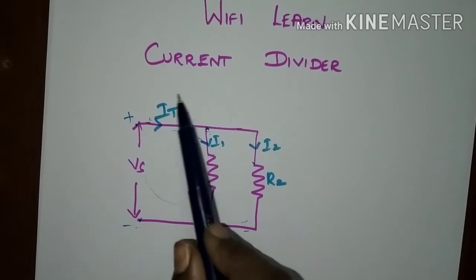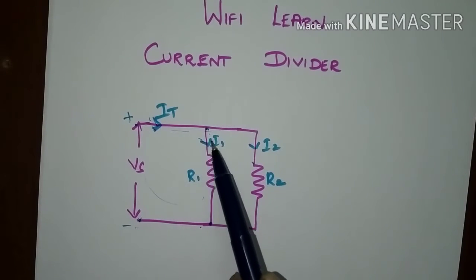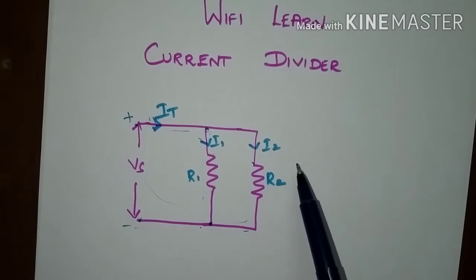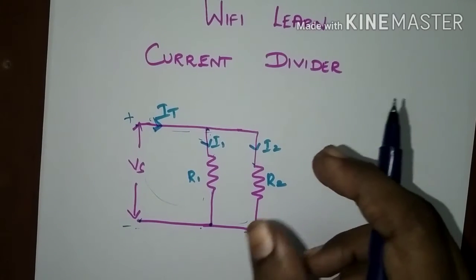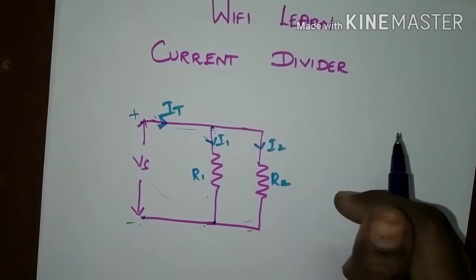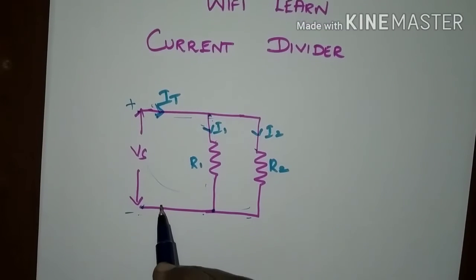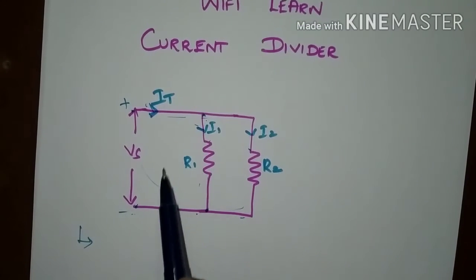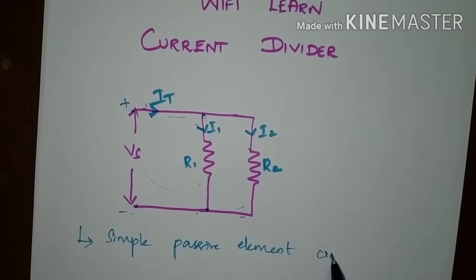The total current is divided as I1 and I2 into the parallel branches. The total current IT can be represented as the sum of I1 plus I2. The current in a parallel circuit differs between branches, whereas the voltage is the same and common to all elements. The current divider is a simple passive circuit, formed by passive elements resistance R1 and R2.